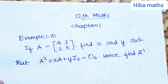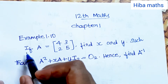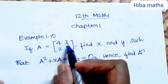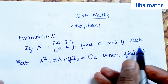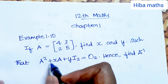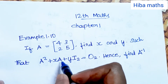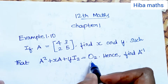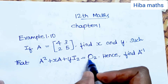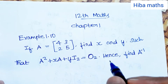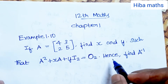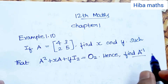Hello students, welcome to Hibamaks 12th standard Maths, Chapter 1, Example 1.10. If A is equal to [4,3,2,5], find x and y such that A² + x·A + y·I₂ is equal to the 2×2 zero matrix. This is where we use A inverse.